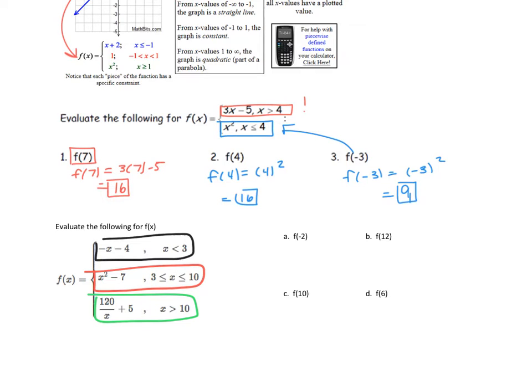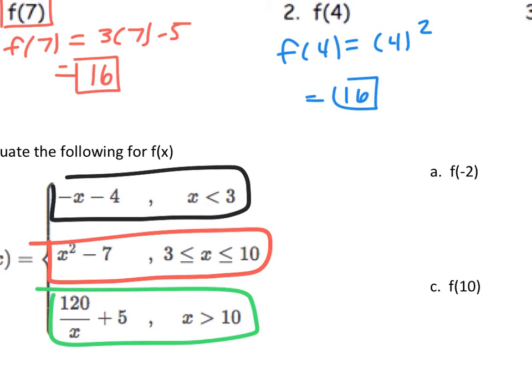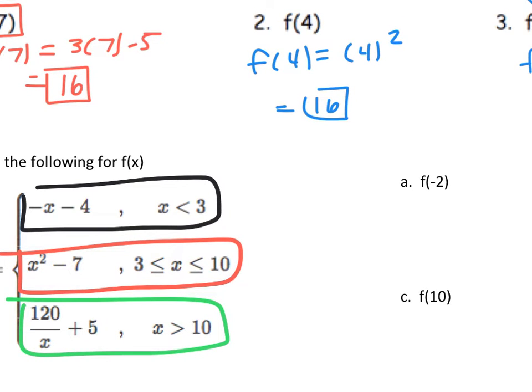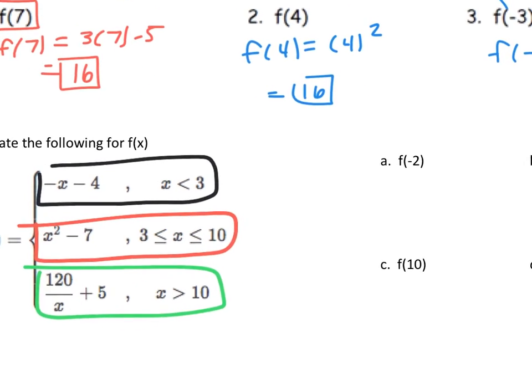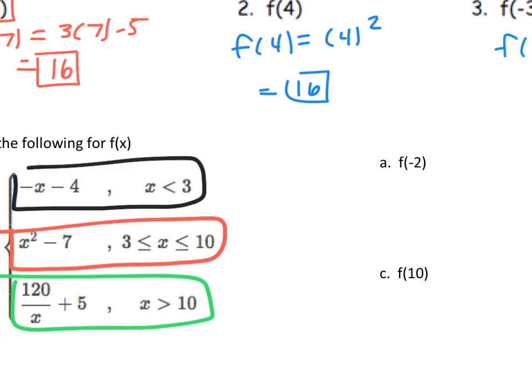So for our first part, or our first piece, we're going to evaluate f(negative 2). So when I look at my domains, I have to ask myself, where does negative 2 lie? So when I look at it, I'm going to go from bottom to top. Negative 2 is not larger than 10, so it can't be in my green piece. Negative 2 is not between 3 and 10, so it can't be in my red piece. So by default, negative 2 has to be in my black piece because it's smaller than 3. So I plug in negative 2. I'm going to use my black marker this time. So f(negative 2) equals negative negative 2 minus 4. You can type this right into your calculator as you wrote it, or you can do it in your head. I would recommend you do some of these in your head. That way you can practice your fluency. The negative of a negative 2 is 2, and 2 minus 4 is negative 2. So that's basically telling you that when I plug in negative 2, my y coordinate is negative 2.